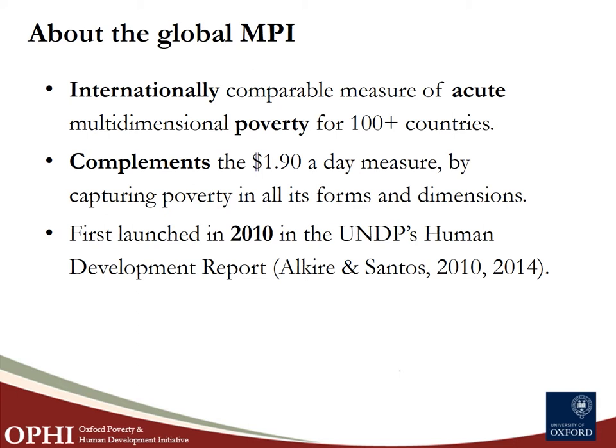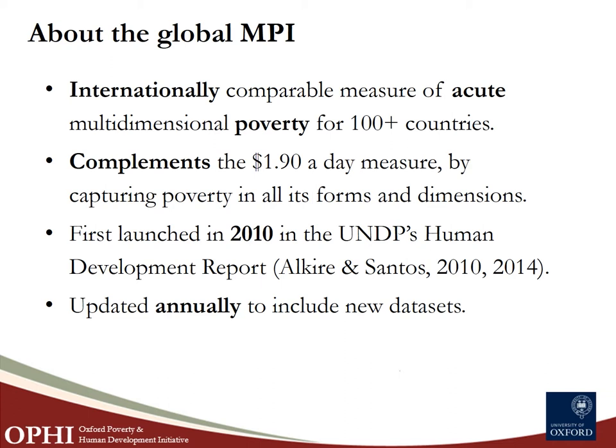The Global MPI was first published in 2010 during the time of the Millennium Development Goals. It was developed by OFI in collaboration with the UNDP's Human Development Office. The 2010 work is extensively documented in two key publications by Sabina Alkire and Maria Emma Santos. Since then, we have been updating the Global MPI annually to include new datasets.